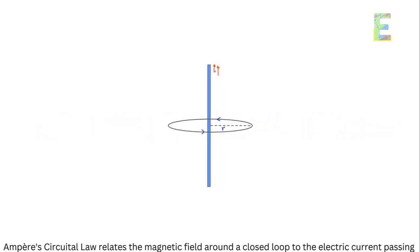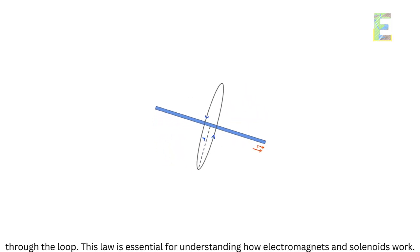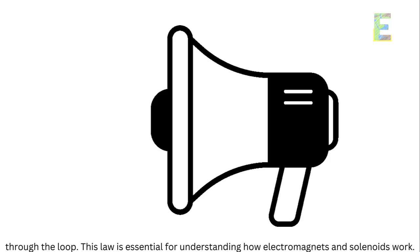Ampere's Circuital Law. Ampere's Circuital Law relates the magnetic field around a closed loop to the electric current passing through the loop. This law is essential for understanding how electromagnets and solenoids work.